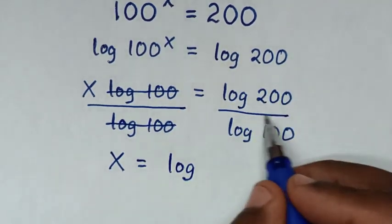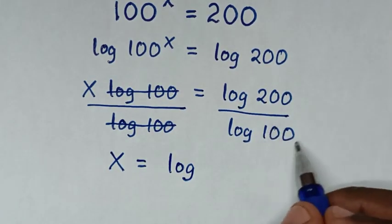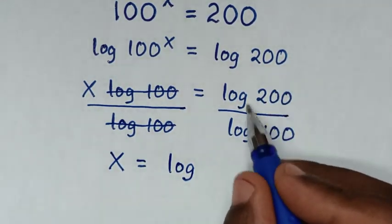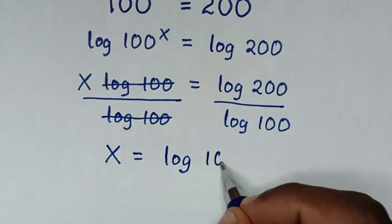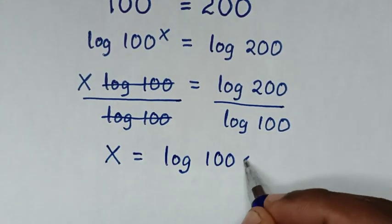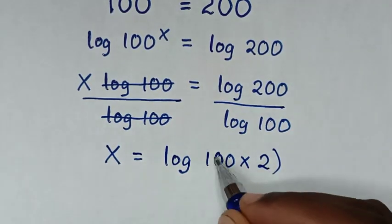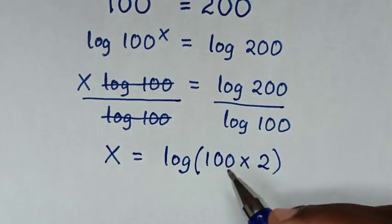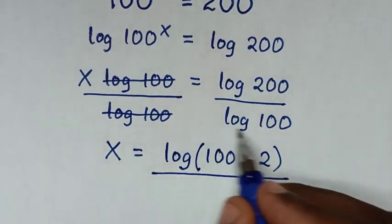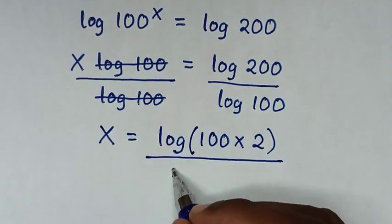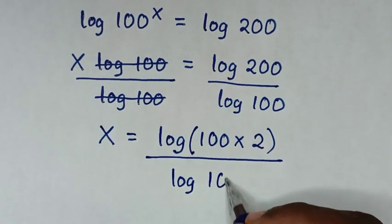Now, 200 is the same as 100 times 2. So we can rewrite this as: x is equal to log of (100 times 2), all over log of 100.